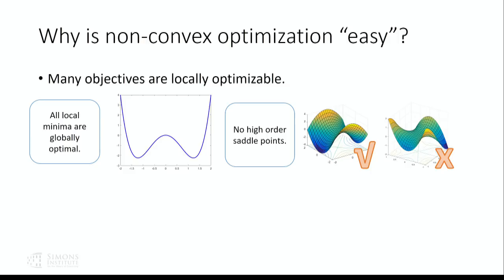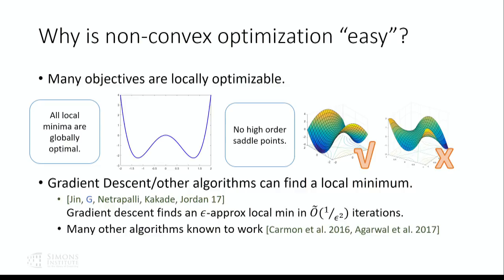Under these two nice properties, there are many algorithms known to find a local minimum efficiently. For example, our previous work showed that gradient descent can find an epsilon-approximate local minimum — sometimes called an epsilon second-order stationary point — in roughly 1 over epsilon-squared iterations. In addition to gradient descent, there are many other algorithms that can improve the iteration count from 1 over epsilon-squared to something like 1 over epsilon to the 1.75. So we have very good algorithms for finding the local and global optimal for these objective functions.